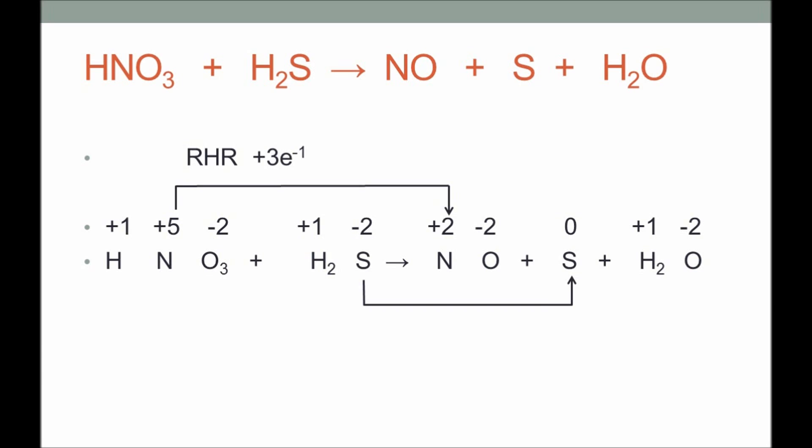Sulfur, on the other hand, changes its oxidation number from −2 to 0, which is an increase in oxidation number, making this the oxidation half-reaction. In the process, it produces 2 electrons. At this point we know the oxidation half-reaction and the reduction half-reaction, and that is enough to determine what the coefficients are going to be.